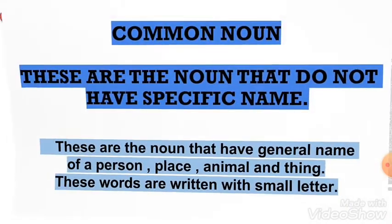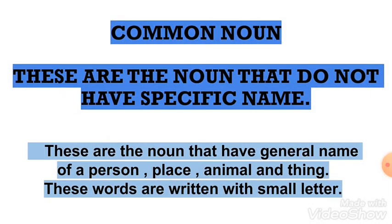And what more we have learned about nouns? It's the type: common noun. So what is common noun? Common noun means the general name of a person, place, animal and thing. These words are written with a small letter. For example: cat, dog, hospital, school, pen, pencil.